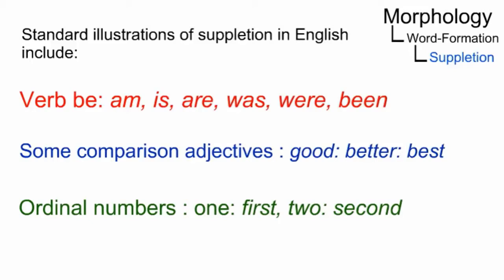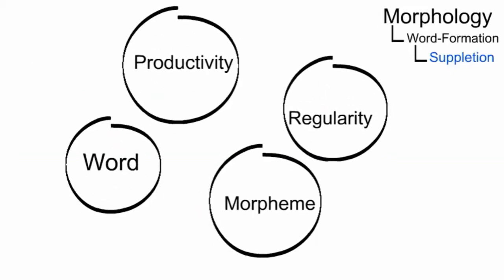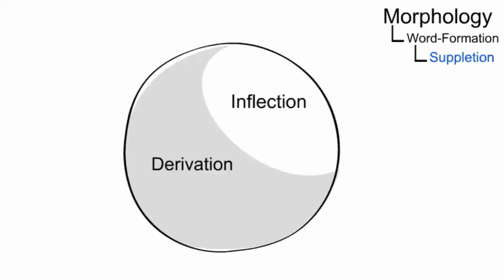Defining suppletion is more complicated than it may seem. Pertinent issues concern long-debated theoretical notions such as word, morpheme, regularity, productivity, and the dichotomy between derivation and inflection.